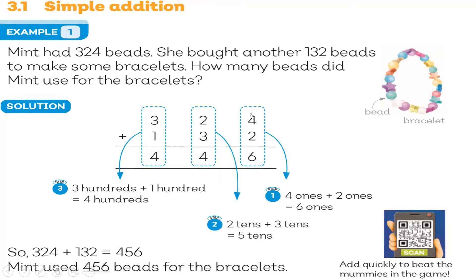Step two. After we finish the ones, we will answer the tens. Two tens and three tens is equal to five tens. So this will be five. Then let's go to hundreds. Three hundreds plus 100 equals 400. So 324 plus 132 is equal to 456. Mint used 456 beads for the bracelet.